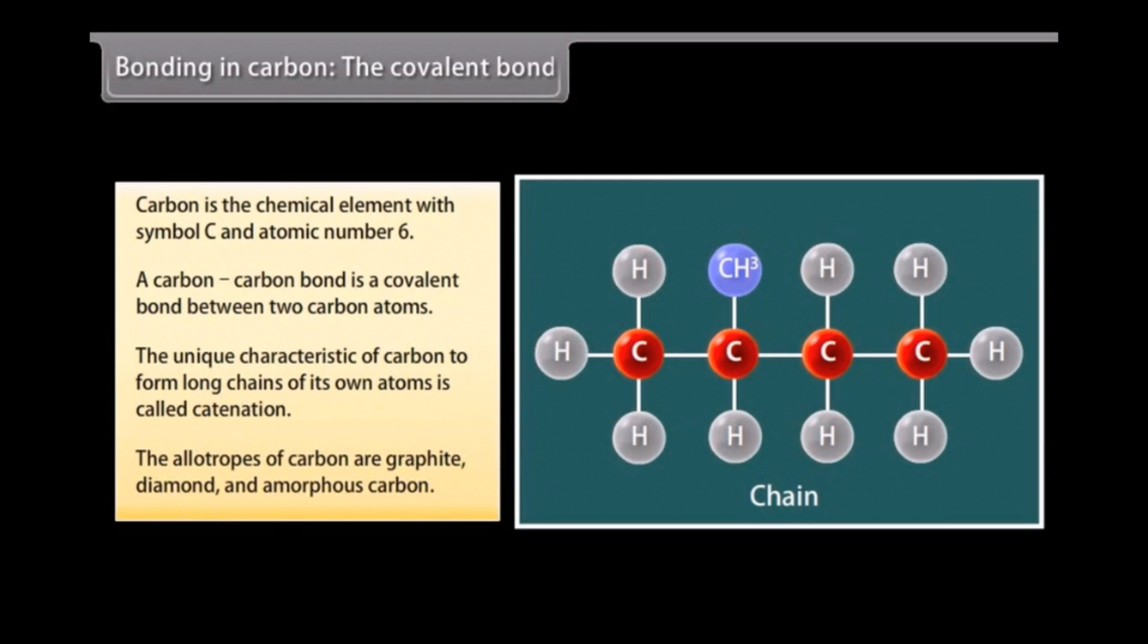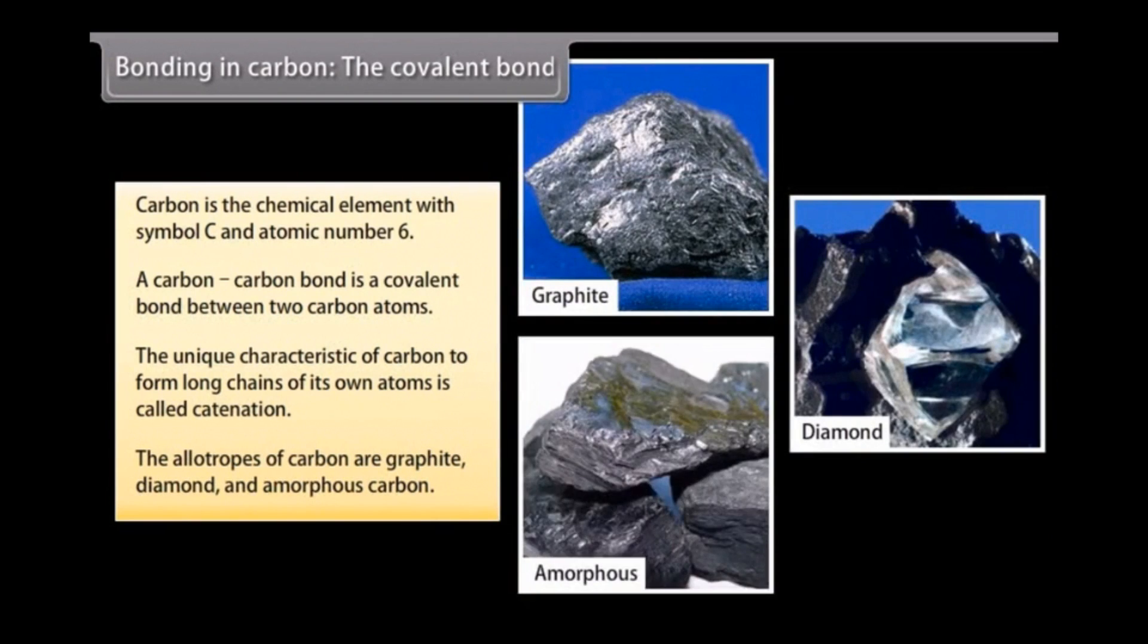The allotropes of carbon are graphite, diamond, and amorphous carbon.